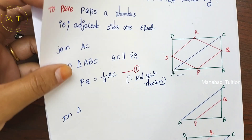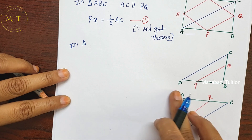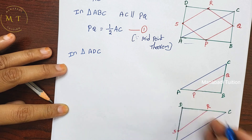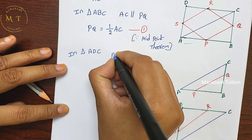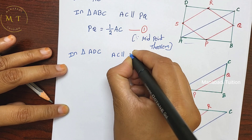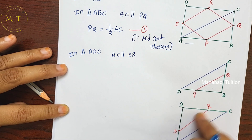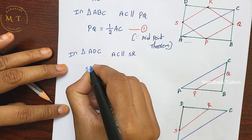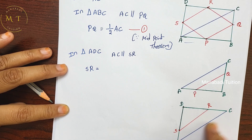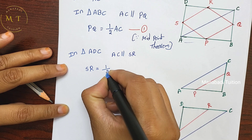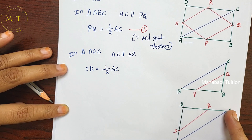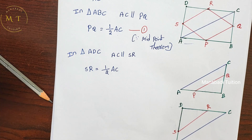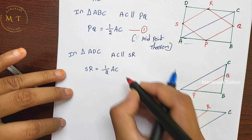Similarly, in triangle ADC, S and R are midpoints of sides AD and CD. By the midpoint theorem, SR is parallel to AC and SR is equal to half of AC. Write this as equation number 2: SR = ½AC.